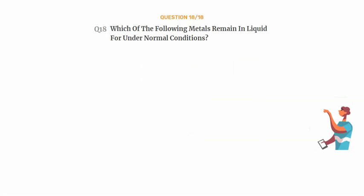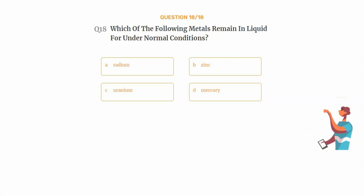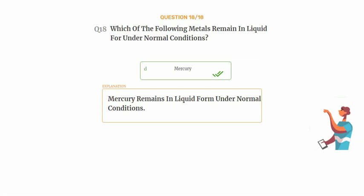Question number eighteen: which of the following metals remains in liquid form under normal conditions? Option A: radium, option B: zinc, option C: uranium, option D: mercury. The correct answer is option D: mercury. Mercury remains in liquid form under normal conditions.